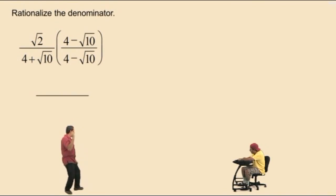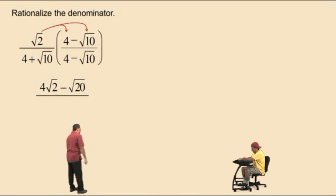Now, in the numerator, we must distribute. Charlie, what's square root of 2 times 4? 4 square root of 2. That's right. Now, bring down your subtraction. What's square root of 2 times square root of 10? Square root of 20. Very nice there.